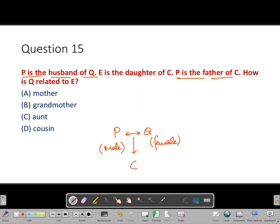It is given E is the daughter of C, which means C is married to someone and they have a kid. E is female because E is the daughter of C.